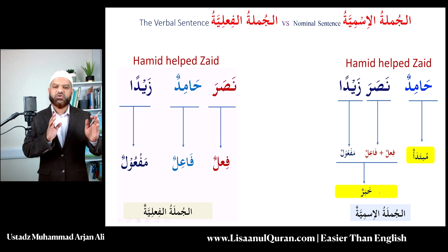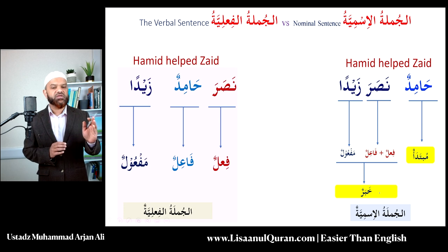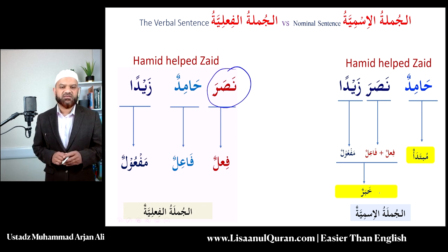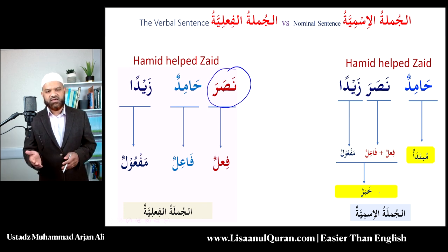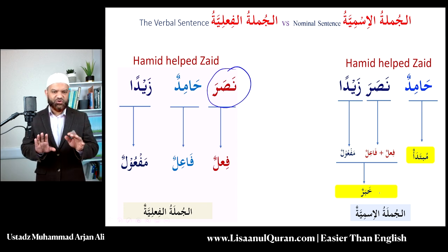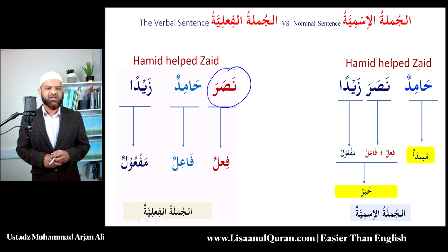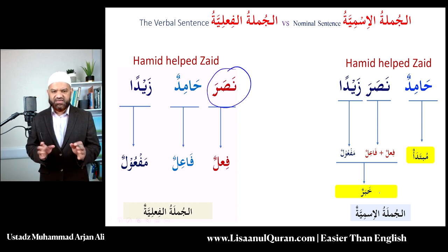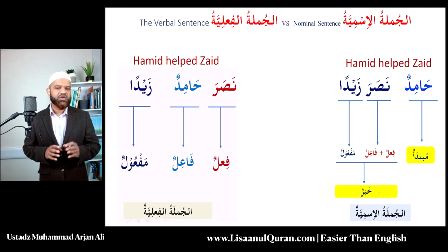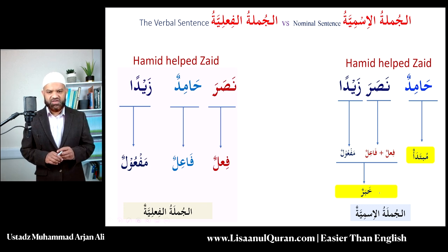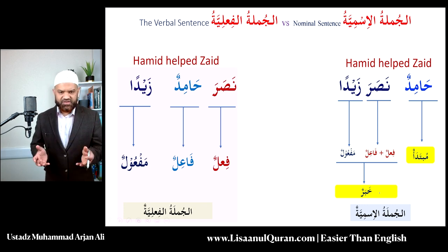As far as we are concerned at the beginning, one is jumlah ismiyyah because it begins with an ism; the other is jumlah fi'liyyah because it begins with a fi'l. Bringing the subject first creates some kind of emphasis. So the three main components of jumlah fi'liyyah are: number one, the verb; number two, the doer — both essential; and number three, the object, which may or may not be present.